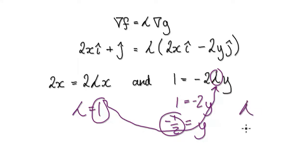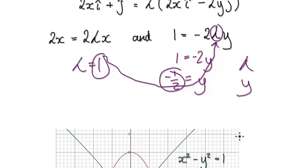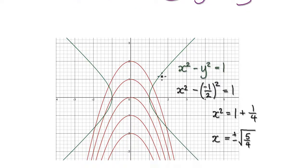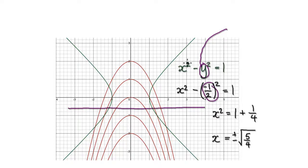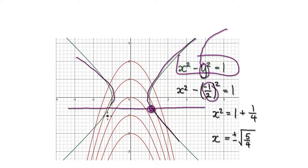If lambda equals 1, then 1 equals negative 2y, so y equals negative one half. Now we know lambda and y. Remember, no matter what we have to live on the constraint. We know lambda is 1 and y must be negative one half, so negative one half would be somewhere on this constraint line here.